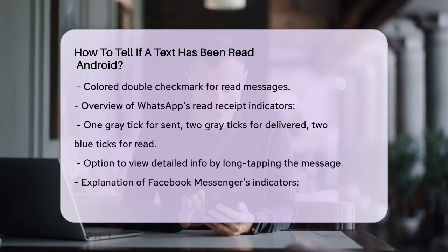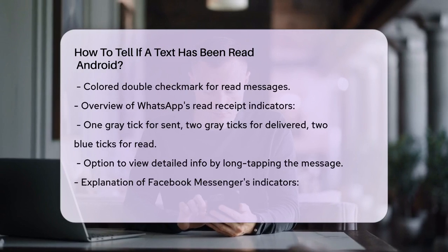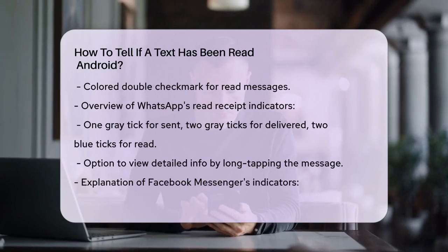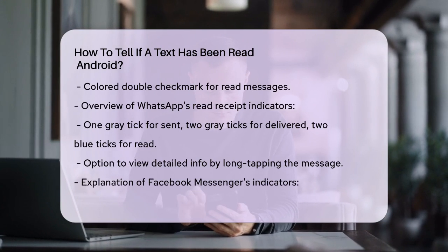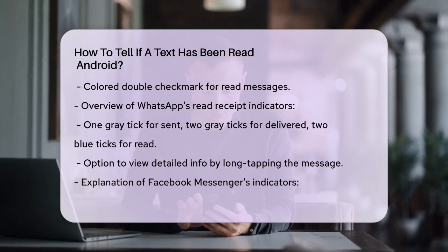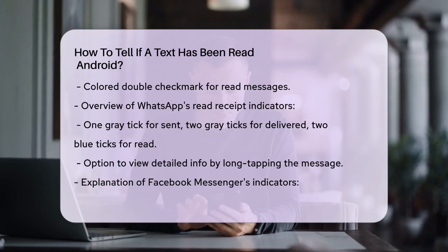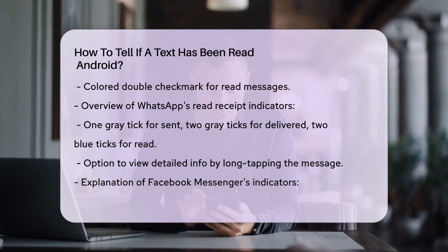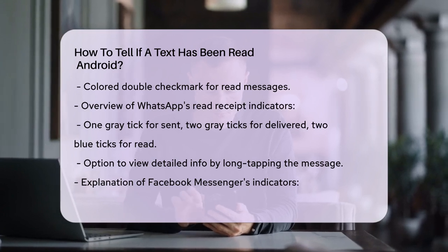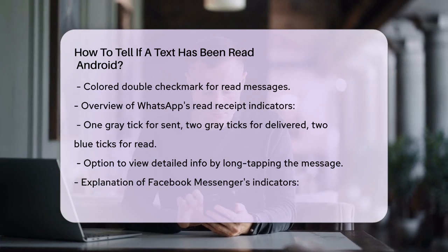If you're using other messaging apps, like WhatsApp, the process is a bit different. On WhatsApp, you'll see one gray tick when your message is sent, two gray ticks when it's delivered, and two blue ticks when the recipient has read it. You can also check the detailed info by long-tapping the message and selecting the I button at the top.